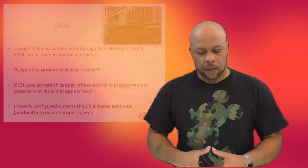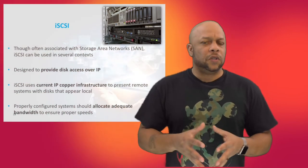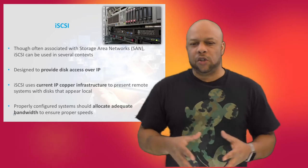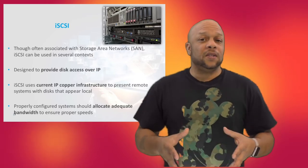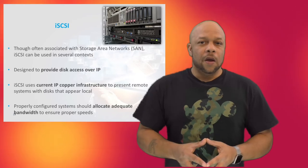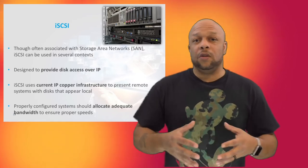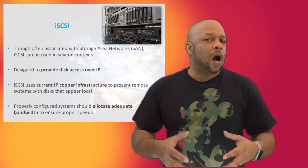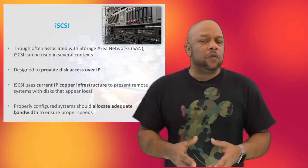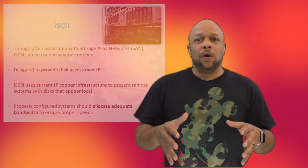Next, iSCSI and VPNs. iSCSI is most often associated with the SAN, though there are some other practical applications. It's designed to provide disk access over IP. The key advantage of using iSCSI is that you can use the existing copper wiring inside the facility; however, you need to ensure that you've allocated the proper bandwidth within the organization.